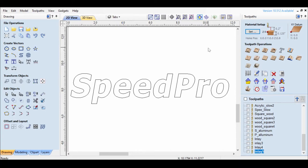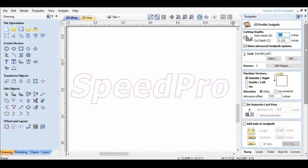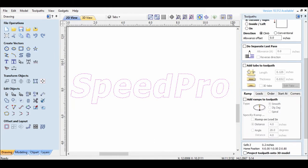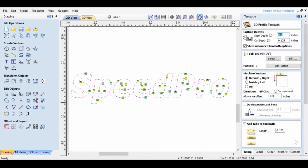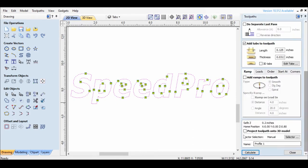We used vCore Pro from Vectric to generate the tabs, but there is a variety of software that you can use. Here, under profile toolpath, you click on add tabs to toolpath and select the length and thickness that you want to use. We used one eighth for the length and 1/32 of an inch for the thickness. You can also edit the predefined tabs and change the number of tabs per vector and move the position of the tabs as an option. Then, you can click on calculate to generate the profile.